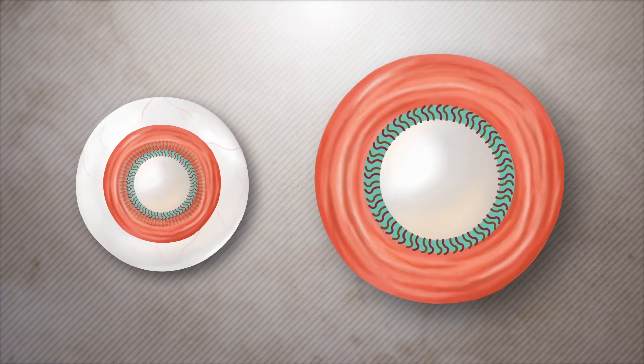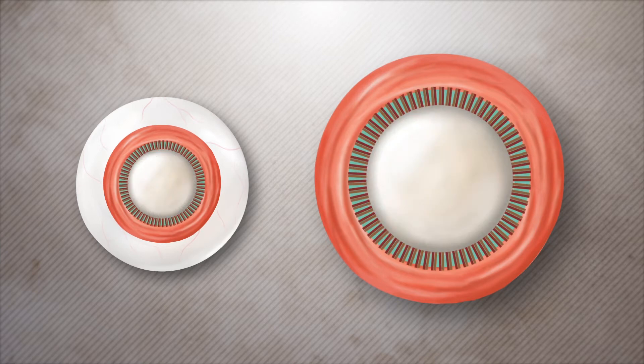In contrast, when the eye focuses on a distant object, the ciliary muscles will relax and cause the zonules to tighten. The lens flattens, allowing objects to be seen at a distance.